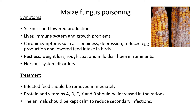For treatment of maize fungus poisoning: infected feed should be removed immediately — check the feed first. Protein and vitamins A, D, E, K, and B should be increased, mainly to boost the immune system of the animal so they can fight the poison. Lastly, the animal should be kept calm to reduce any secondary infections, since a stressed animal can hurt itself and cause secondary infections.